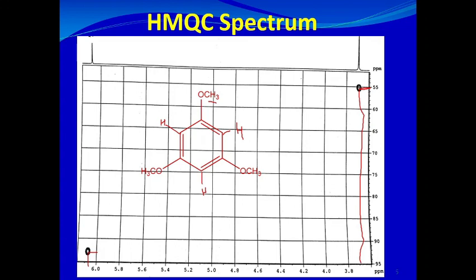Importantly, the HMQC spectrum does not show quaternary carbons because it relies on direct one-bond connectivity between carbon and hydrogen. So only CH, CH2, and CH3 carbons are visible — no quaternary carbons appear. Sometimes molecules are analyzed using HSQC (Heteronuclear Single Quantum Correlation), which gives almost similar results. Nowadays, HSQC is more commonly used. This concludes how you can detect hydrogens and their attached carbons using 2D HMQC or HSQC NMR spectroscopy.